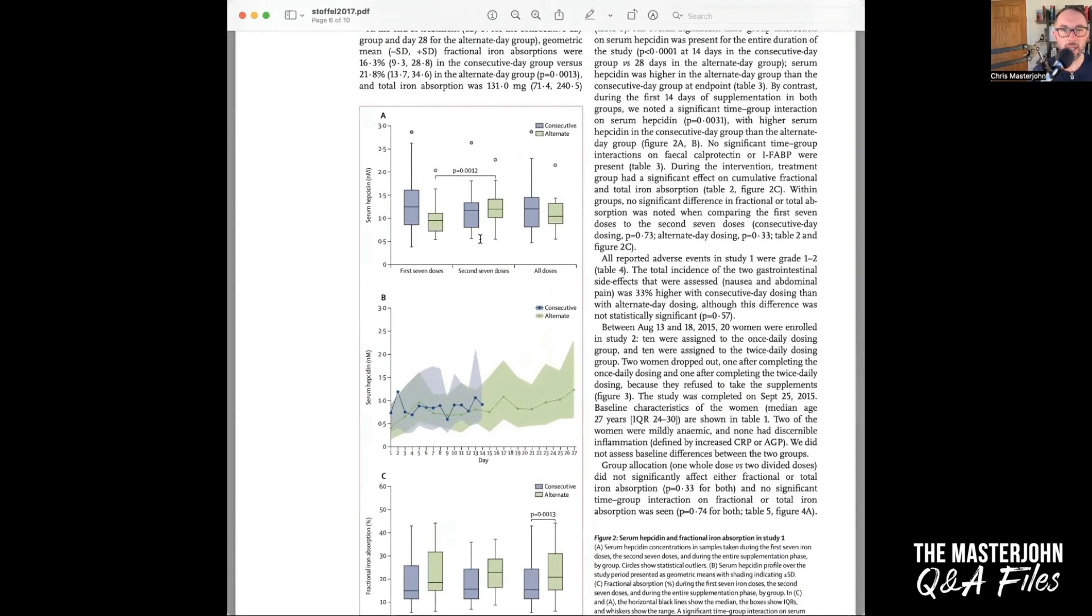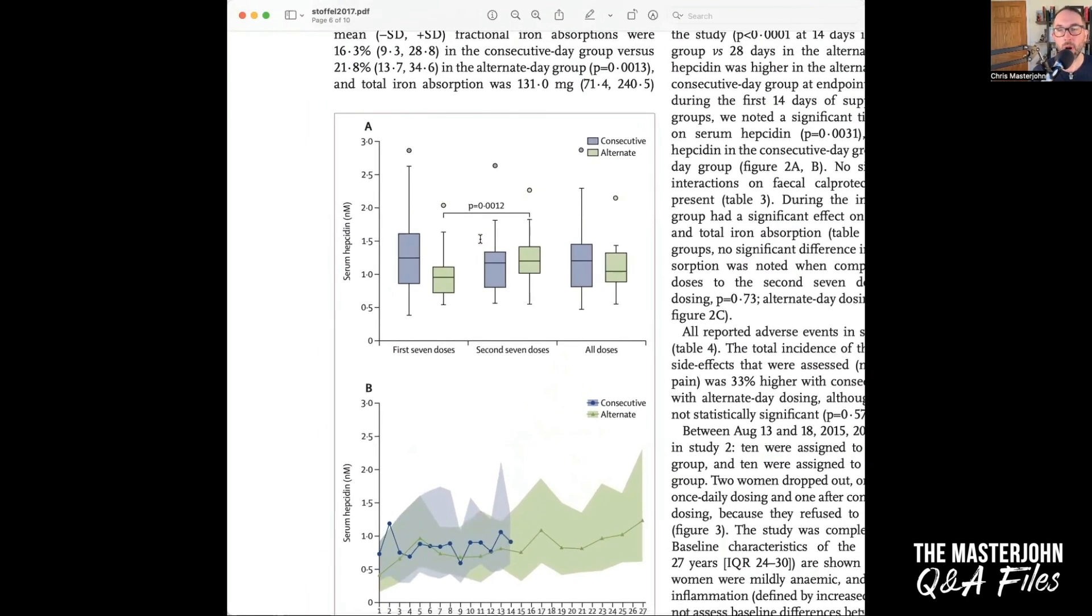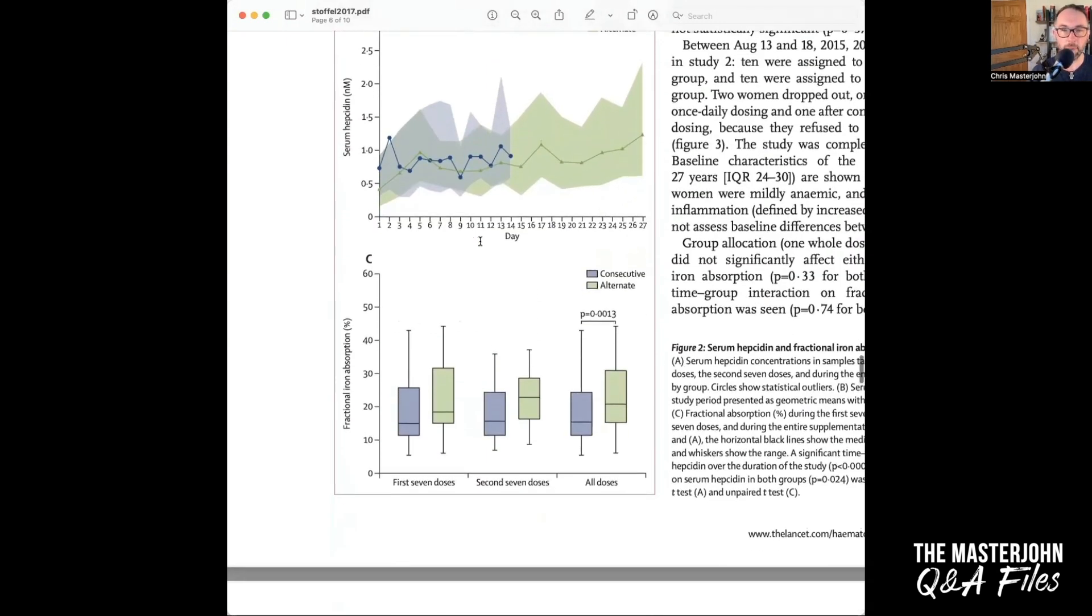This study is iron absorption from oral iron supplements given on consecutive versus alternate days as single morning doses versus twice daily split dosing in iron depleted women, an open label randomized controlled trial by Stoffel in 2017. So this was actually done a little bit earlier. In study one, what they did is they gave everyone basically the same model as before, but the alternate day they carried on for twice as long so that they could give the same total dosing of the iron, and then they switched people and pooled the data.